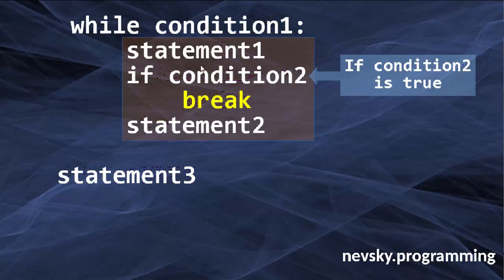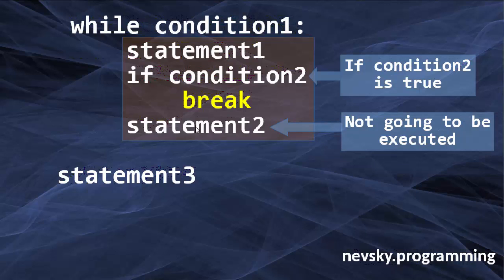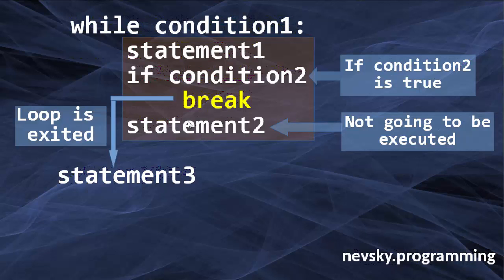If at some point condition 2 is true in our break statement, then all statements after this break statement are not going to be executed. Instead, the loop is going to exit, and our program is going to keep executing statements that are outside of this while loop.